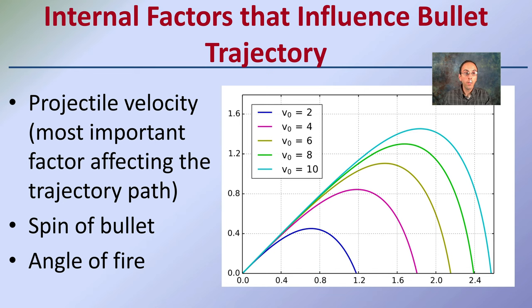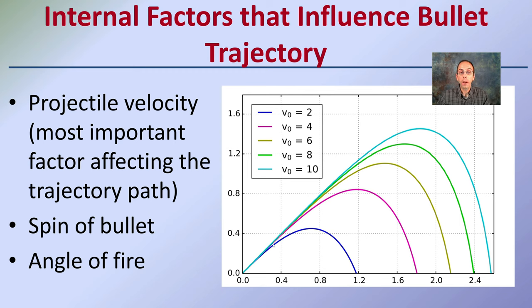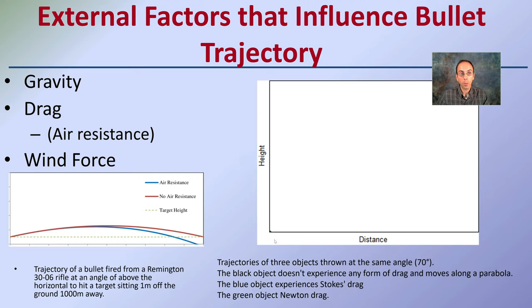We also have internal factors that influence bullet trajectory. Projectile velocity is the most important factor affecting the trajectory path — how quickly is that bullet going, how quickly is it spinning, and what's the angle of fire are all things to take into consideration. We can see here that, given other things equal, changing the speed at which that bullet travels vastly impacts the distance, with all bullets being fired at the same angle in this example.